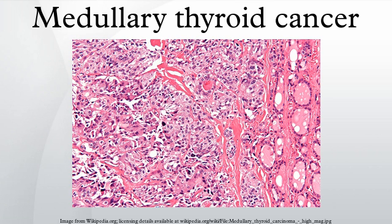Approximately 25–60% of sporadic medullary thyroid carcinomas have a somatic mutation of the RET proto-oncogene. This mutation is presumed to be the initiating event, although there could be other as-yet-unidentified causes.